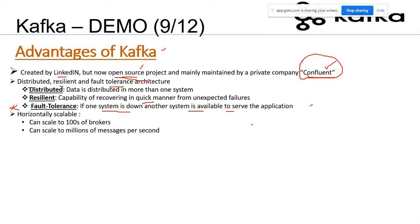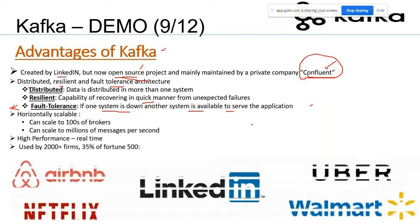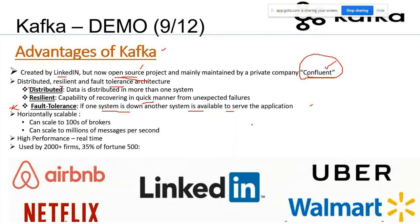There is no limit in Kafka — you can scale to millions and billions of messages per second. Its performance is really high because you can process millions of messages in one second. The purpose of Kafka is to handle tremendous volumes of data. Right now Kafka is used by 2,000-plus companies, including around 35% of Fortune 500 companies — Airbnb, Netflix, LinkedIn, Uber, Walmart, and many more.